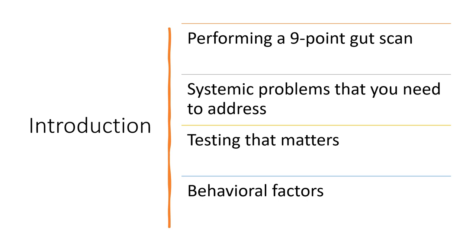The first step is to perform a nine-point gut scan, identifying nine different points within the gastrointestinal tract where symptoms or problems may creep up. We'll also discuss systemic problems such as inflammation, testing that matters — starting with your annual physical's comprehensive metabolic panel — then more specific tests, and finally behavioral factors you can change to pinpoint where problems might be coming from, for example issues with motility or SIBO.